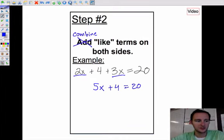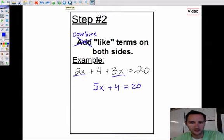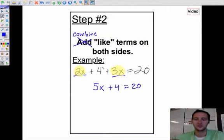Step two, I'm changing that to combine like terms instead of just add them, because the word add gets confusing. It's not always addition. Combine like terms on both sides. In this example we have 2x and 3x on this side. Those combine to make 5x, which gives us 5x plus 4. Like terms are just anything that are similar. X's go with x's, constant numbers go with constant numbers. Those are like terms.